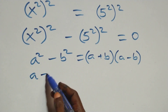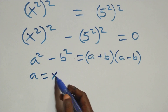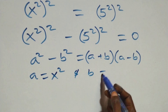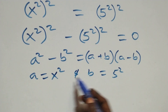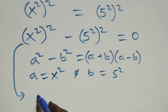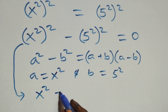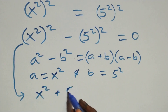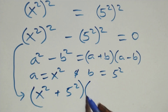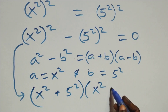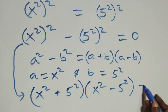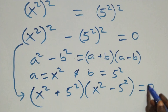Here, a stands as x squared and b stands as 5 squared. Then following this, it becomes: (x squared plus 5 squared) into brackets, then open brackets (x squared minus 5 squared), close brackets, equals to 0.